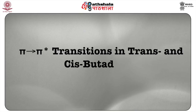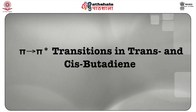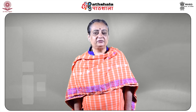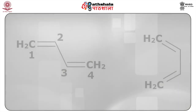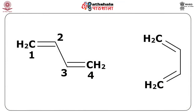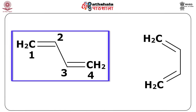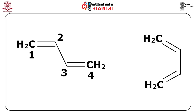We will discuss the π→π* transitions in trans and cis butadiene and see that different rules are predicted for the 2 isomers. The butadiene molecule can exist as the trans or cis isomer; there is an S-trans structure and an S-cis structure. The 2 isomers belong to different point groups: trans belongs to C2H and cis to C2V.